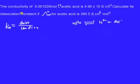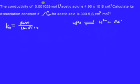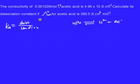Today in this video we are going to find out the dissociation constant of acetic acid when the limiting molar conductivity value and molar conductivity values are given, or the conductivity values are given. The conductivity for this concentration of acetic acid is given, and this is the limiting molar conductivity. How can you find the dissociation constant?